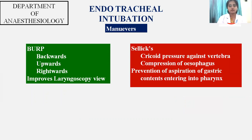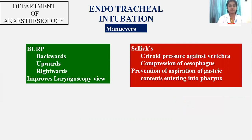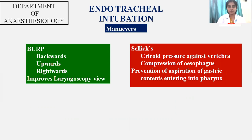There are two maneuvers helpful in endotracheal intubation under certain circumstances. The first is the BURP maneuver — Backward, Upward, Rightward Pressure — in which you push the patient's thyroid cartilage backwards, upwards, and rightward to improve the laryngoscopic view. The other is the Sellick maneuver, in which you apply pressure over the cricoid against the vertebra, leading to compression of the esophagus, which prevents gastric content from entering the pharynx. Sellick's maneuver is used in cases of pregnancy and when the patient has not been fasted.